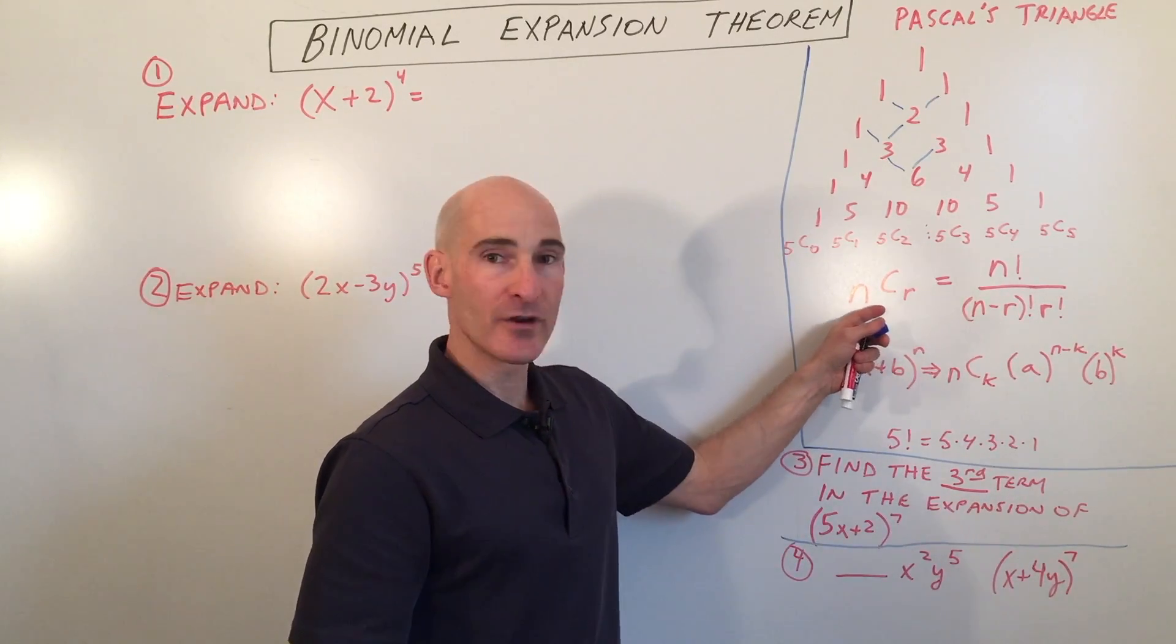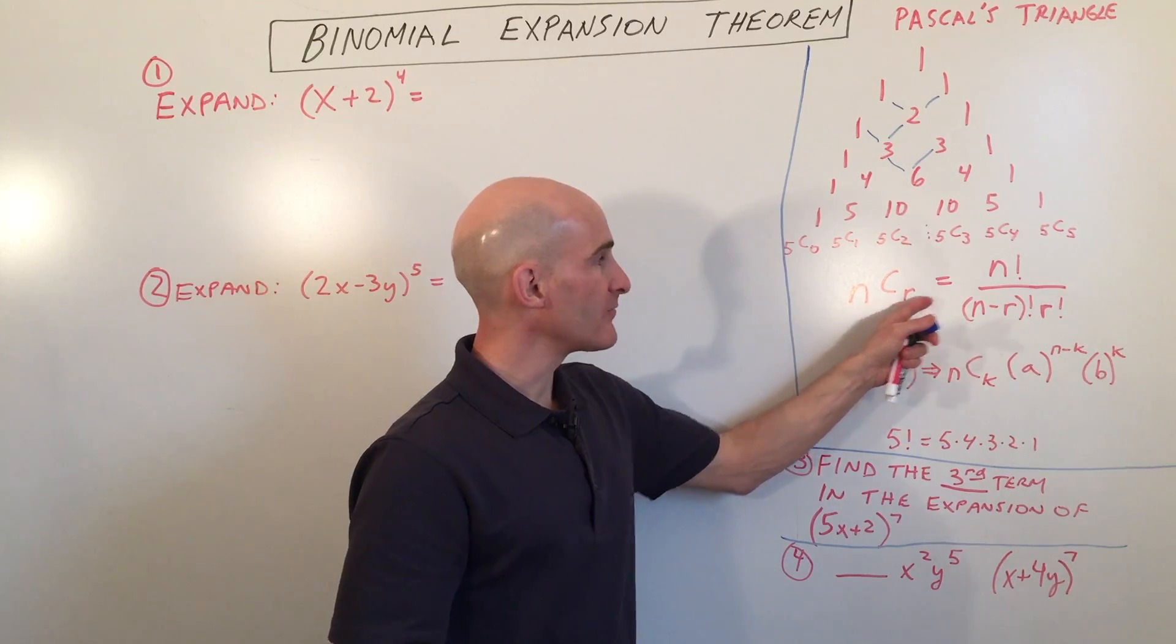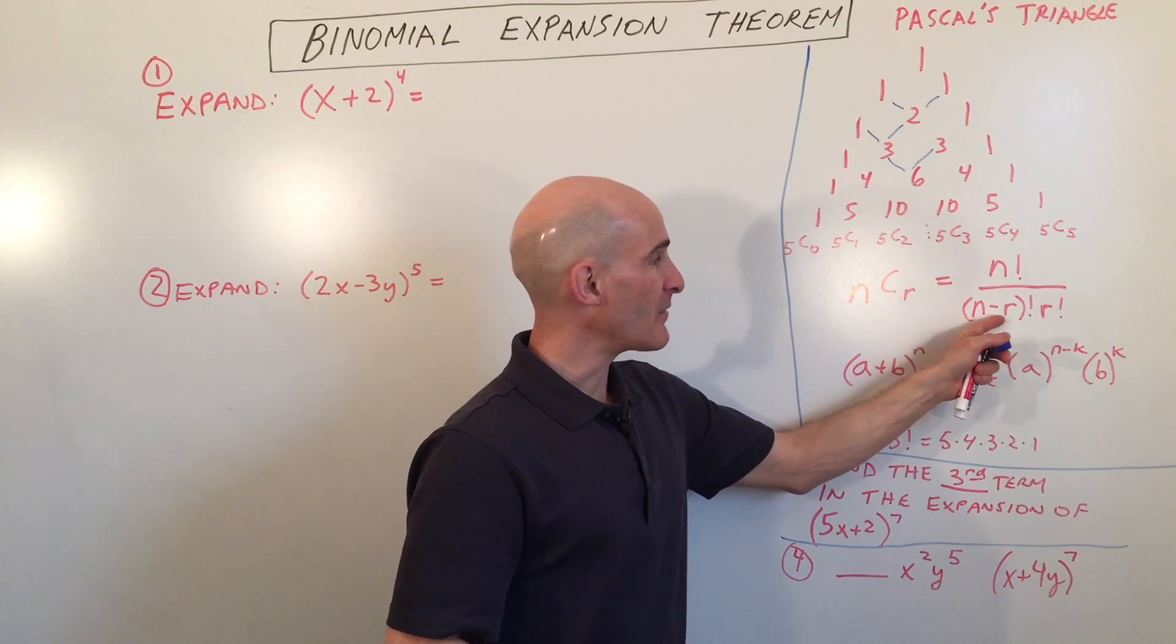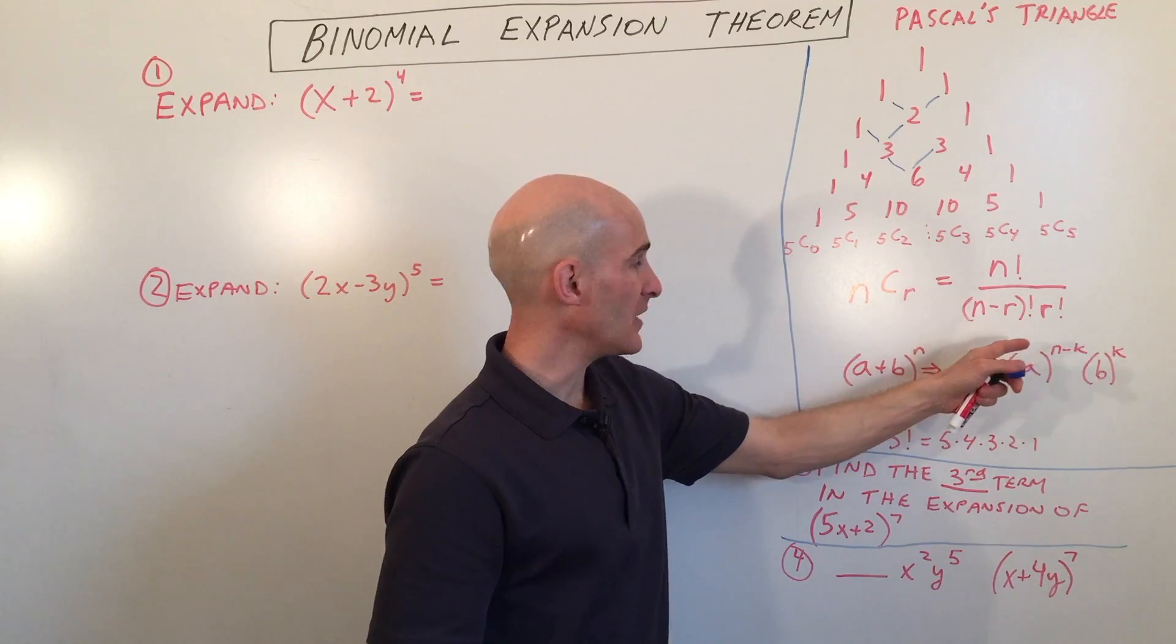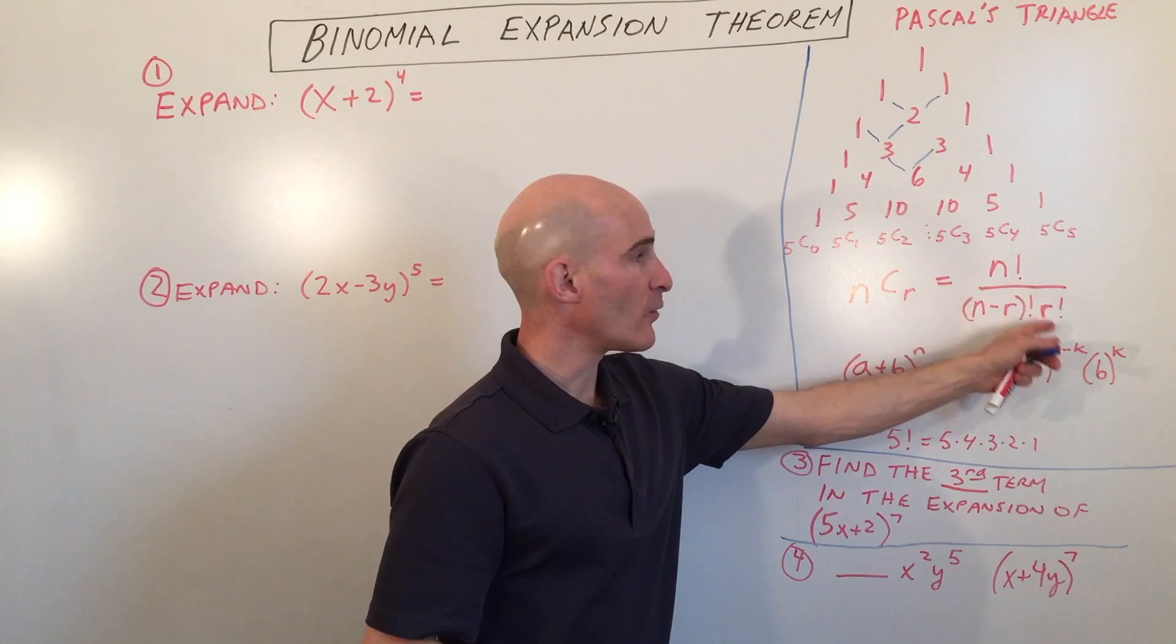So there's a formula here for the combinations. It's NCR equals N factorial divided by N minus R factorial, R factorial. And again, if you need a review on what factorials are...